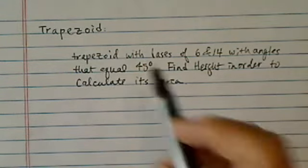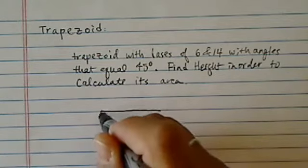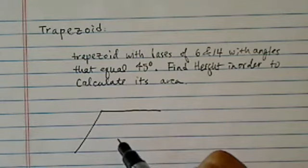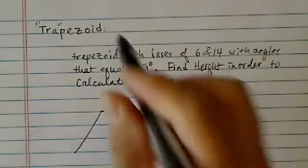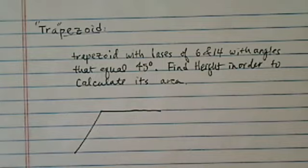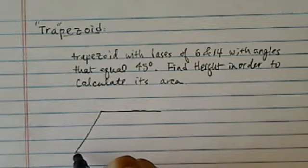I always wondered where the word trapezoid comes from, so I went on Google and searched it. It turned out it's a Greek word: tra (t-r-a) literally means four, and peza (p-e-z-a) literally means edge or table. So it's a four-legged table, and that's what we have, a trapezoid.